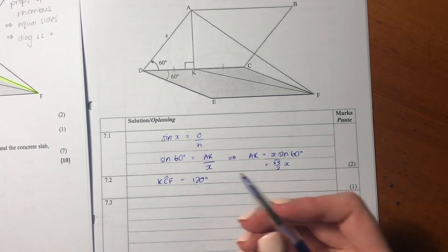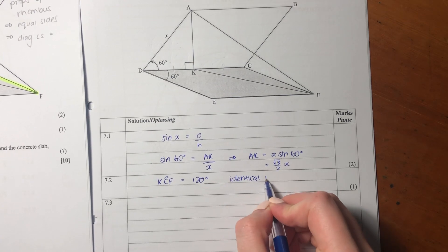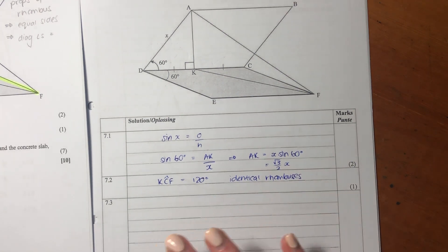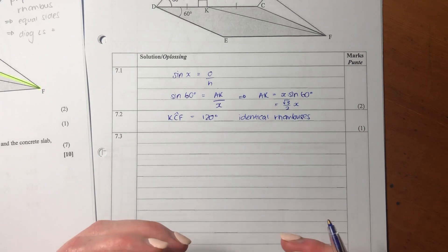But what do we know? We know that this rhombus is identical to this rhombus. So that's 60, therefore that's 60. If that's 120, this is also 120. So our angle KCF equals 120 because we are working in identical rhombuses.